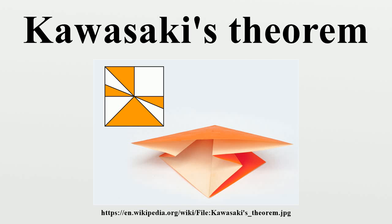An alternative proof of sufficiency is to consider the smallest angle αi and the two creases on either side of it. If one of these two creases is mountain folded and the other valley folded, and then the resulting flap of paper is glued down onto the remaining part of the crease pattern, the result will be a crease pattern with two fewer creases on a conical sheet of paper that still satisfies Kawasaki's condition. Therefore, by mathematical induction, repeating this process will eventually lead to a flat folding. The base case of the induction is a cone with only two creases and two equal angle wedges, which can obviously be flat folded by using a mountain fold for both creases.